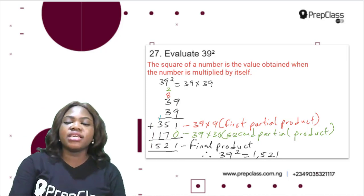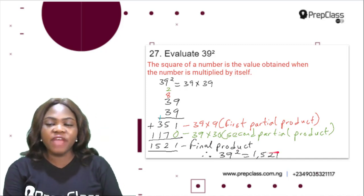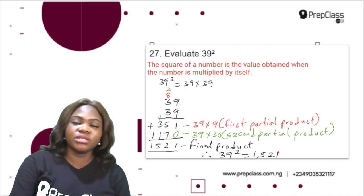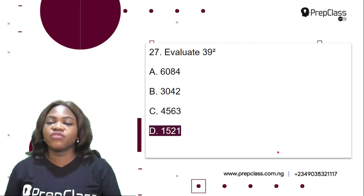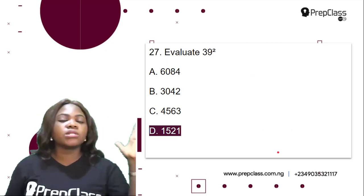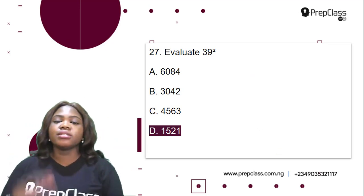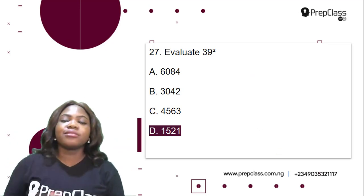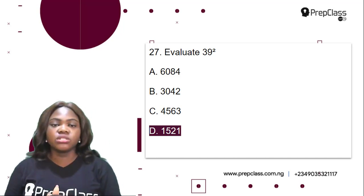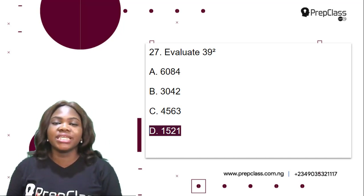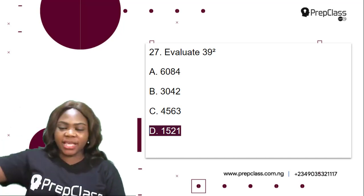So 39 squared is equal to 1521. Finding the square of a number is very easy — just multiply the number by itself. The correct option here is option D.